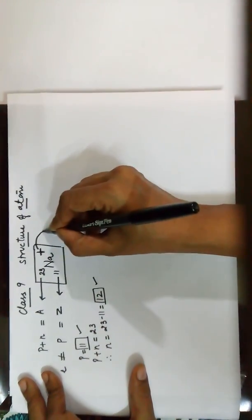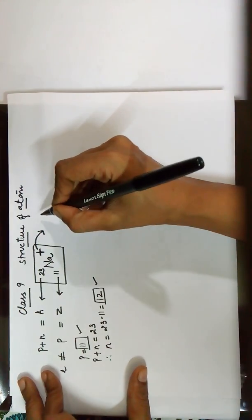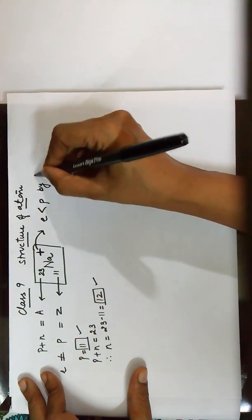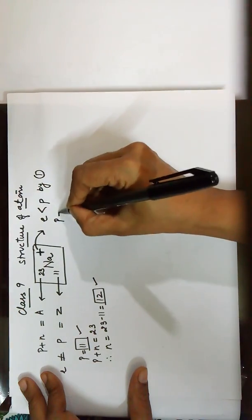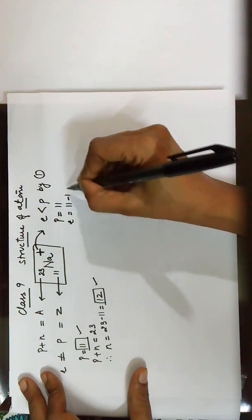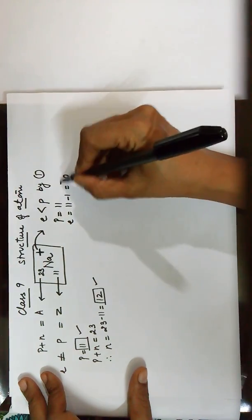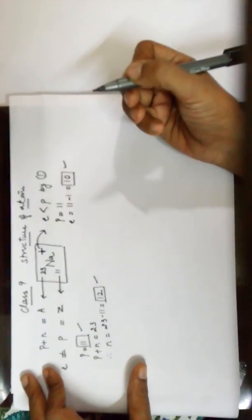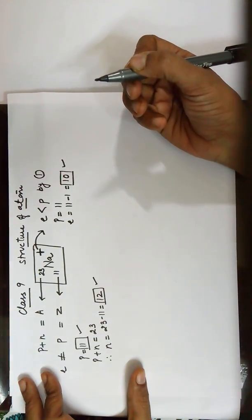The significance of the positive charge is that electrons are less than the protons by one. Since the protons equal 11, electrons are one less, that is, it equals 10. So you now have the protons, the neutrons, and the electrons in a sodium ion.